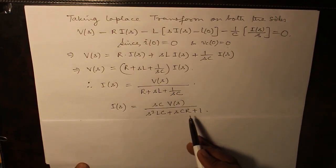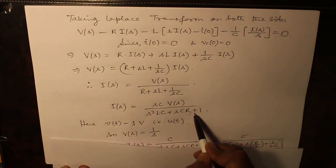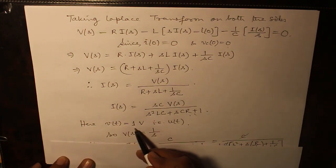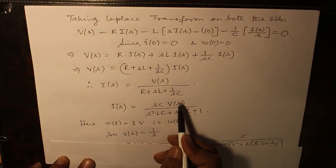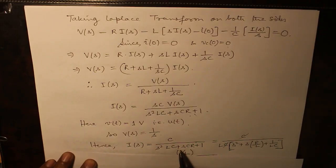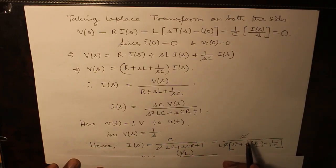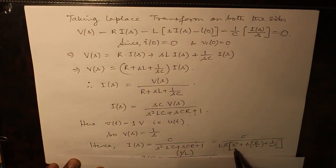And this expression I(s) equals V(s) over R plus sL plus 1 over sC, which finally gives you this. V(s) taking LC common or here since the voltage has been specified as 1 volt, so V(s) will substitute here, s into V(s) becomes 1. So there will be C left, C over s²LC plus sCR plus 1. So LC is taken common from here, so that the coefficient becomes unity and C gets cancelled and this L is brought in the numerator as 1 over L.